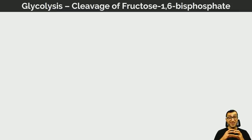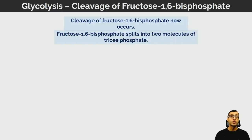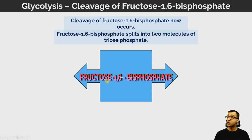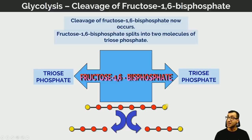Fructose-1,6-bisphosphate is so high in potential energy that it is essentially unstable and breaks down — cleavage now occurs. This six-carbon molecule splits into two molecules of three-carbon sugars, each called a triose phosphate. In the simplified diagram, the six red circles represent the six carbon atoms and the two yellow circles represent the two phosphate groups. This then cleaves in the middle to produce two molecules of triose phosphate, each with one phosphate group.